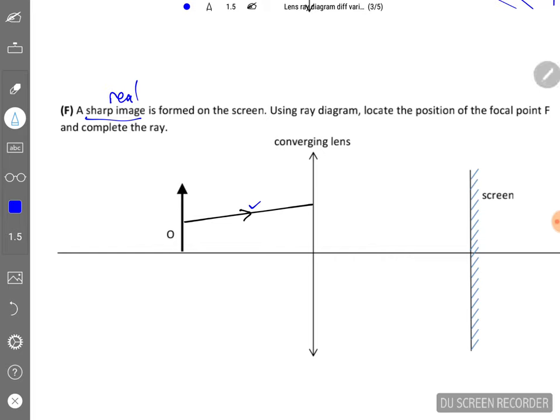So to start with, as usual, you'll draw the two rays here. One passes through the optical center and the other one parallel to principal axis, after which it will converge to the same point because it's a sharp image formed. So from here, you're able to know the position of the image.